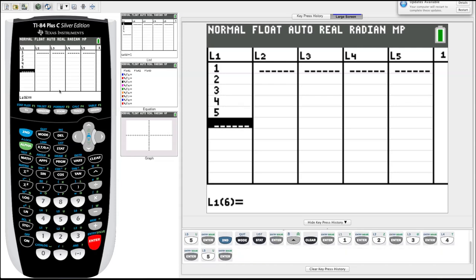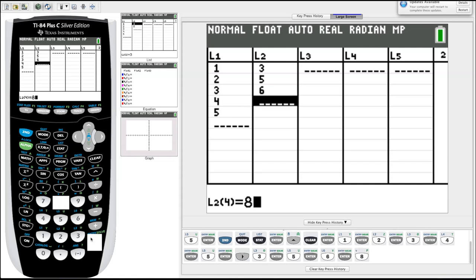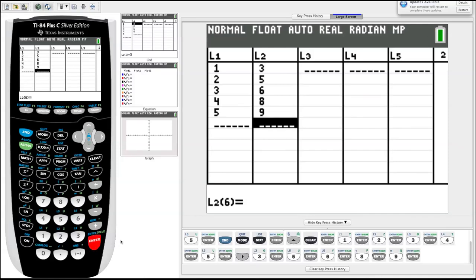These we can make our x values later on, but we're going to need some y values when we start plotting. So let's enter some data into list two. Same way we did in list one, we just arrow over to the first cell, start typing in our numbers, hit enter after each one. It automatically brings us down to the next cell. Now we have data entered in list one and list two.